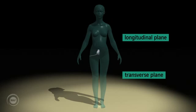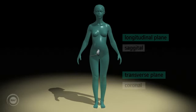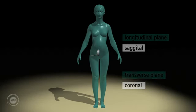Longitudinal and transverse are used when referring to the position of the probe. The terms sagittal and coronal are used when referring to the view obtained by the probe of the mother or fetus.